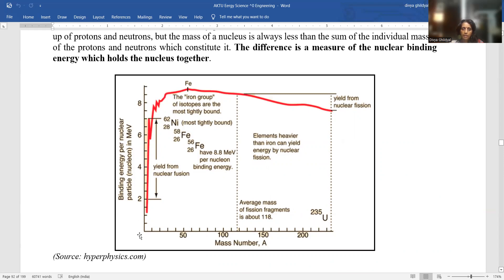Let us have a look at the binding energy per nuclear particle and the mass number. We notice that this graph increases, reaches a peak value and then it is going this way. That means the peak value, the iron group of isotopes are most tightly bound.